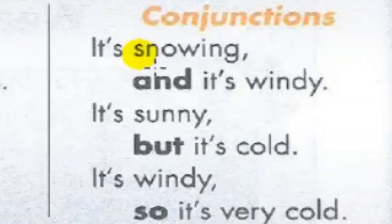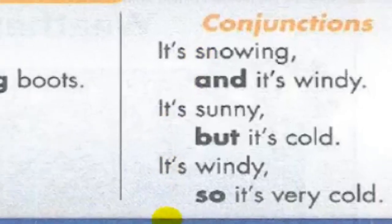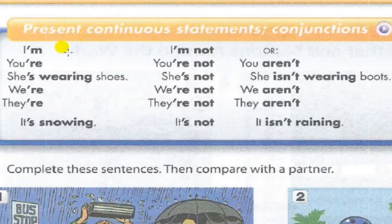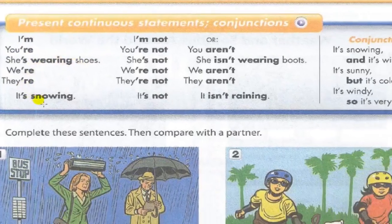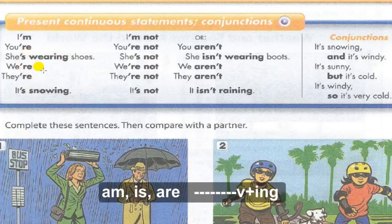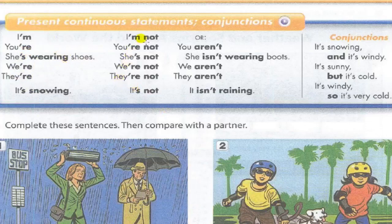Conjunctions: It's snowing and it's windy. It's sunny but it's cold. It's windy so it's very cold. Present continuous: I am wearing shoes. You are wearing shoes. She is wearing shoes. We are wearing shoes. They are wearing shoes. It's snowing. Am, is, are — verb plus -ing. This is the present continuous. Negative: I am not, you are not, she is not, we are not, they are not. Or contractions: you aren't, she isn't, we aren't, they aren't — verb plus -ing.